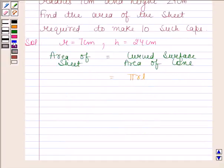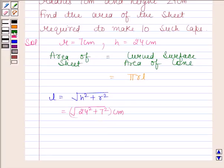Now let us first find l. We know that l is equal to square root of h² plus r². Substitute the value of h and r. h is equal to 24 cm and r is equal to 7 cm. And this is equal to square root of 625 cm, which equals 25 cm.